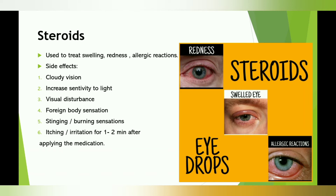The first side effect of steroids is cloudy vision. Second is increased sensitivity to light. Third is visual disturbance. Fourth is foreign body sensation — the patient can feel that something is in their eyes. Fifth is stinging and burning sensation, and sixth is itching and irritation for one to two minutes after applying the medication. These are the side effects of steroids, which are used to treat swelling, redness, and allergic reactions.